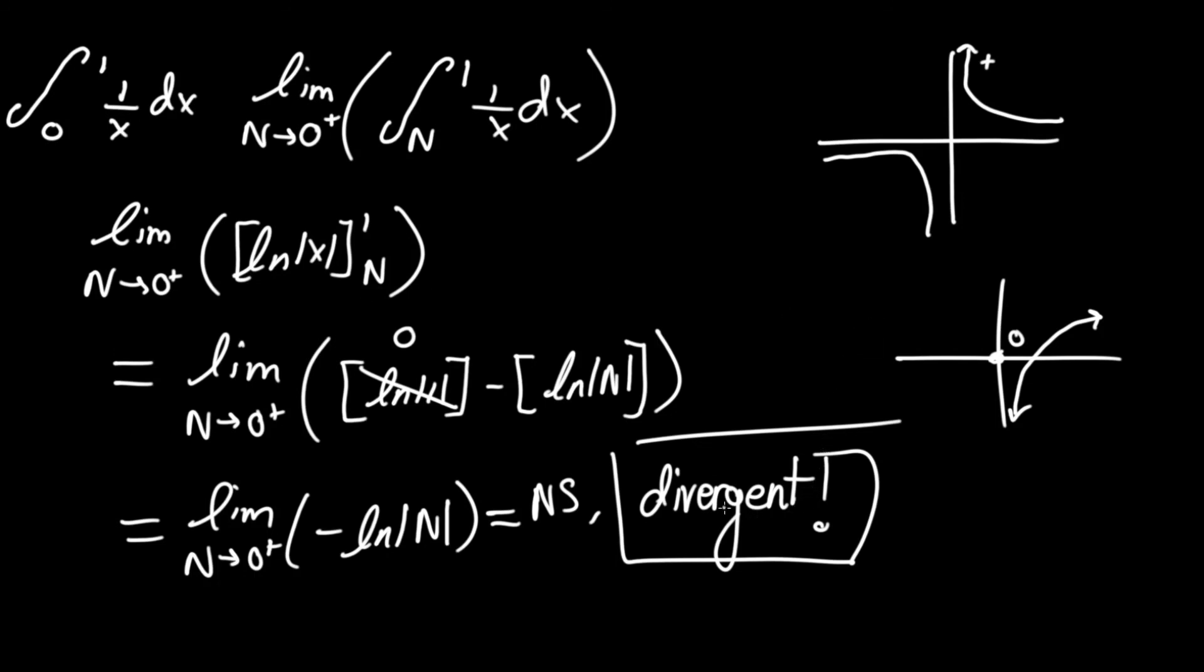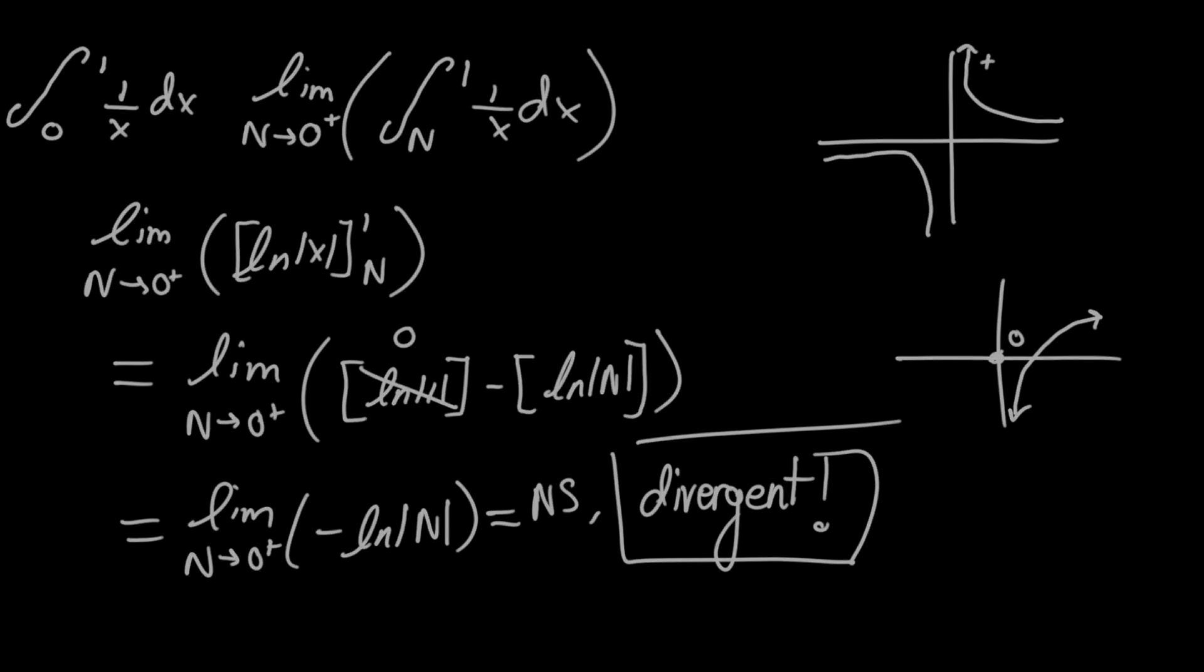So yeah, in conclusion, the integral of 1 over x dx between 0 and 1 is actually divergent. There is no solution. I hope this made sense to you. If you have any questions, put them in the comments below, and good luck!